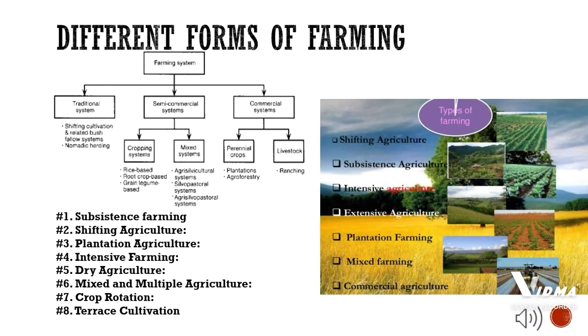Different forms of farming include: subsistence farming, shifting agriculture, plantation agriculture, intensive farming, dry agriculture, mixed and multiple agriculture, crop rotation, and terrace cultivation.